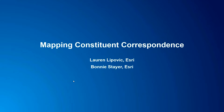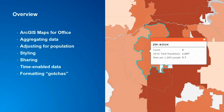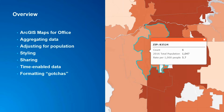Thanks, Lauren. To get started, here is an overview of what I'm going to cover today. I'll start with an overview of the ArcGIS Maps for Office technology, which is what offices are using to map their constituent correspondence. Then I'll talk about scenarios you might encounter, such as how to aggregate your data and how to adjust for population. We'll also cover styling your map, sharing options, time-enabled data, and a few formatting gotchas.